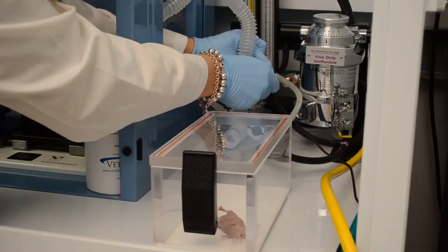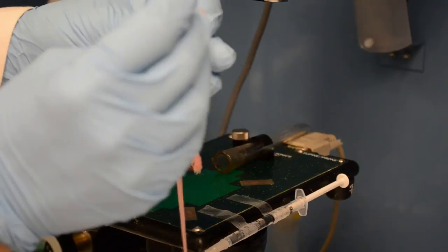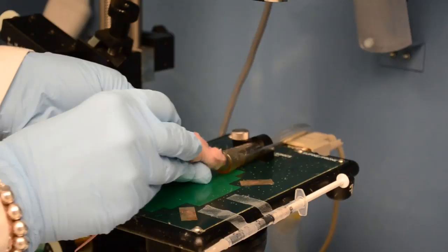Take the mouse out of the induction chamber and gently place eye lubricant to prevent dryness during imaging. Place the mouse on the imaging platform on its side to prepare for vascular access through the tail vein.